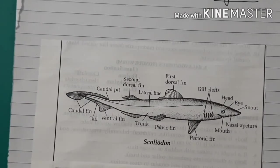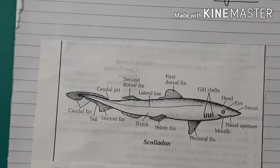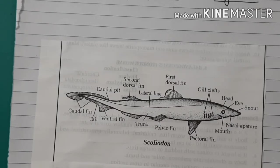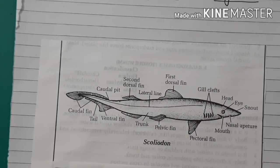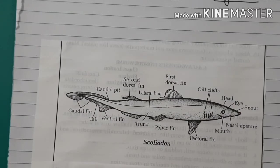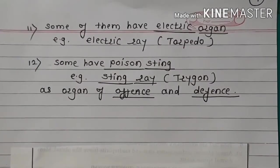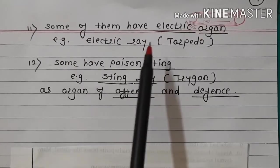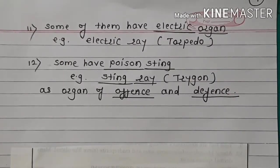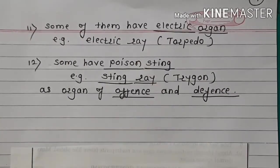Air bladder is absent; thus they are constant swimmers. They are predatory fish. Fertilization is internal. Many of them are viviparous, that is, they give birth to young ones. Some of them have an electric organ — example, Electric Ray.